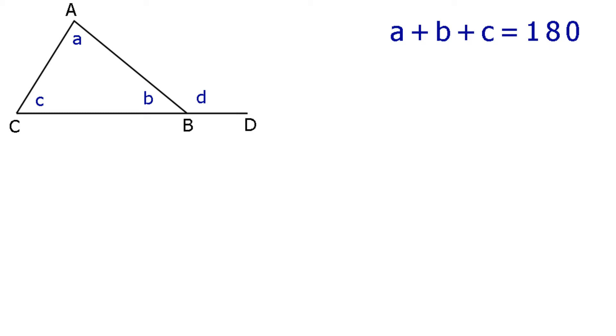Well, since angle ABC equals B degrees, and angle ABD equals D degrees, and the two angles added together make up a straight line, that is, they are supplementary, it follows that B plus D equals 180. If we now subtract the second equation from the first, like so.